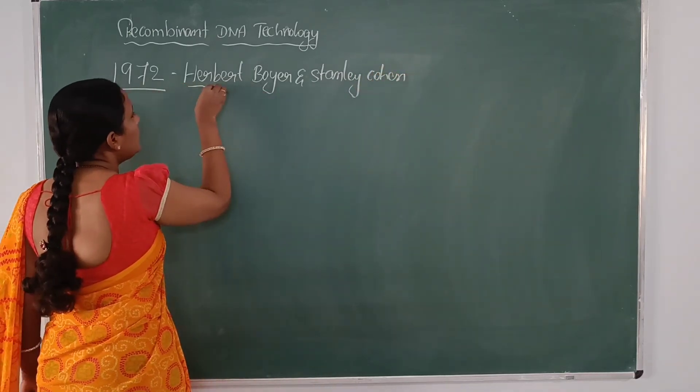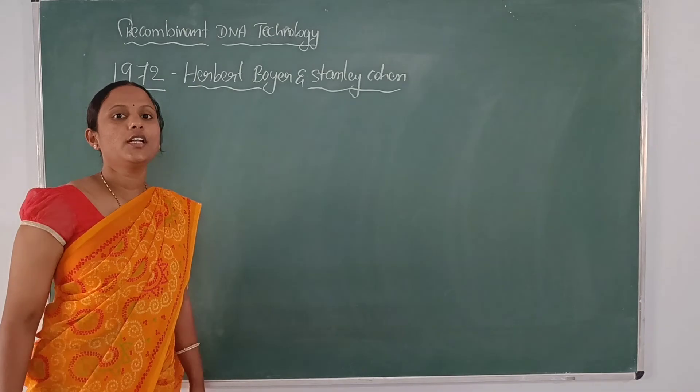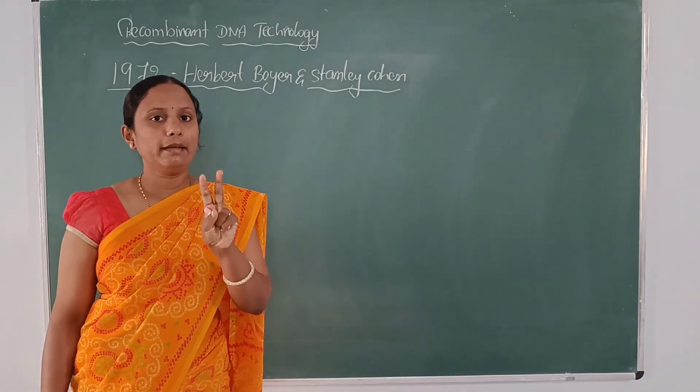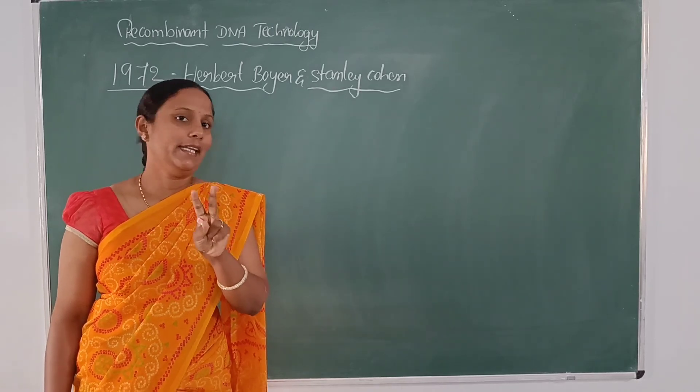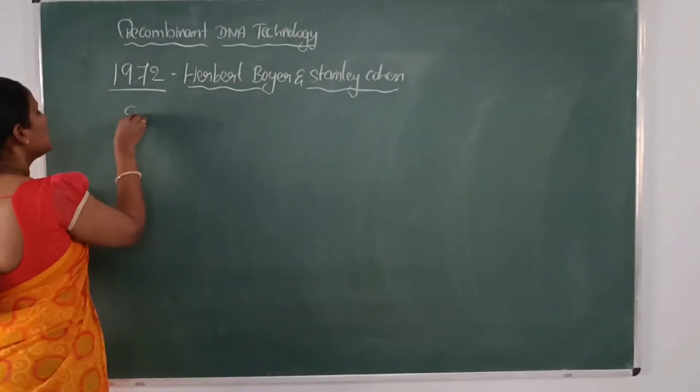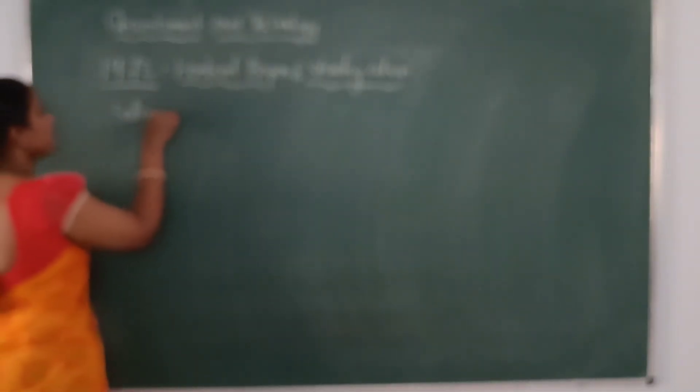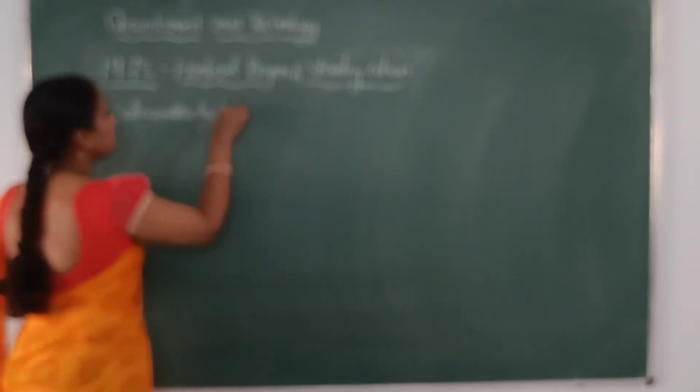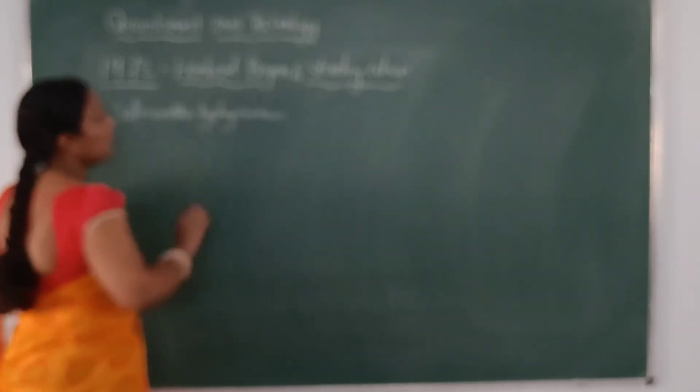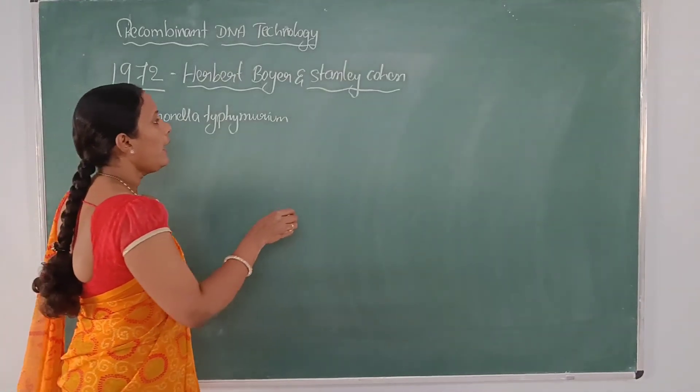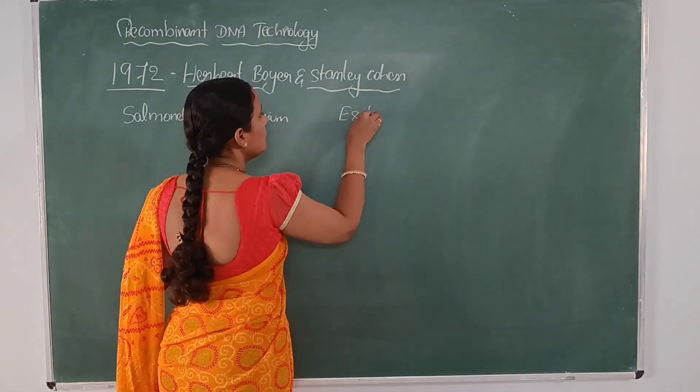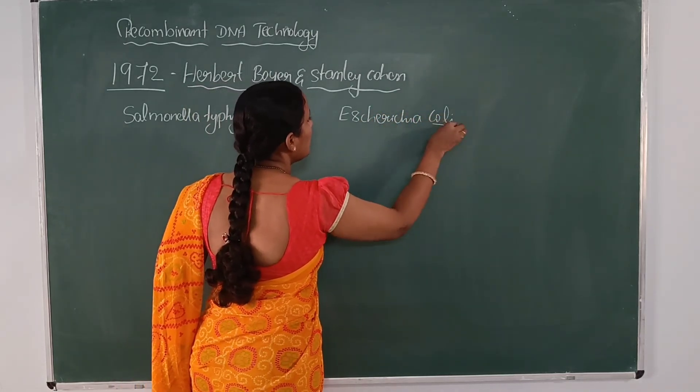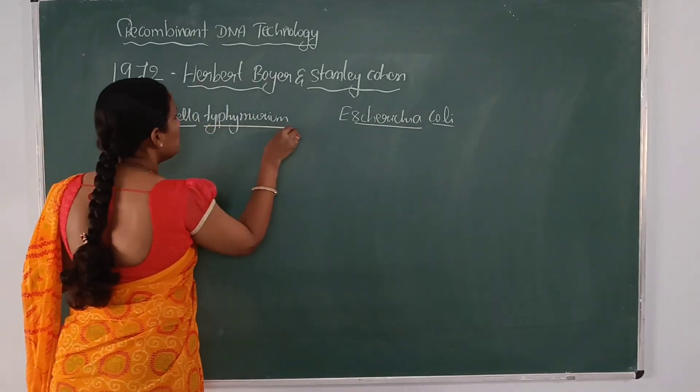They developed the first artificial recombinant cell by using two related bacteria: Salmonella typhimurium and Escherichia coli.